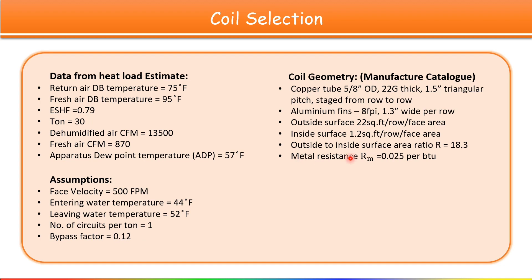Some data you will get from the manufacturer catalog, like metal resistance value — in our case 0.025 per BTU. Outside to inside surface area ratio is 18.3, inside surface is 1.2 square feet per row per face area, and outside surface is 22 square feet per row per face area.